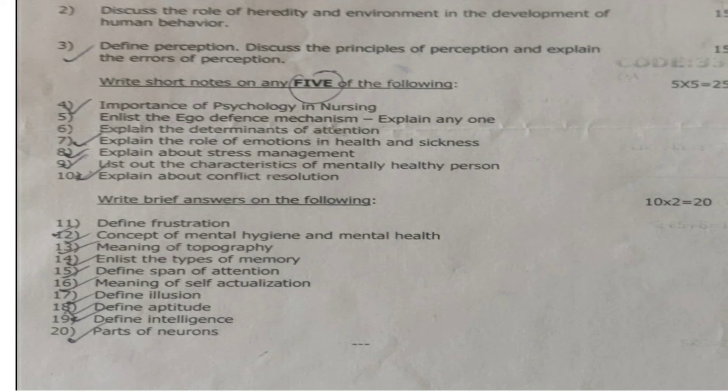Next, we are moving on to brief answers. Brief answers are for 2 marks each. There will be 10 brief answer questions with no choice, so you have to answer all 10. 10 into 2 is equal to 20 marks.